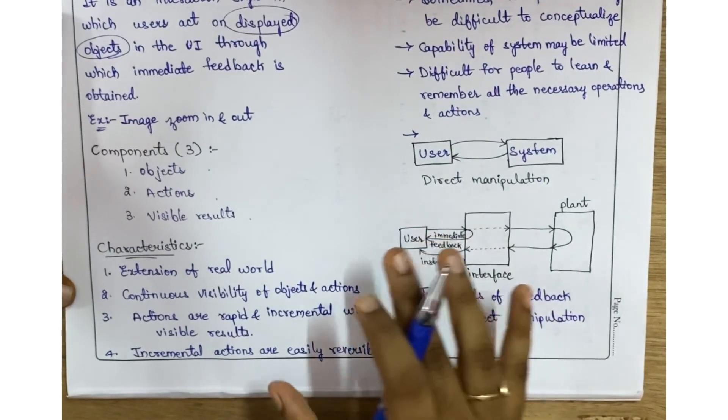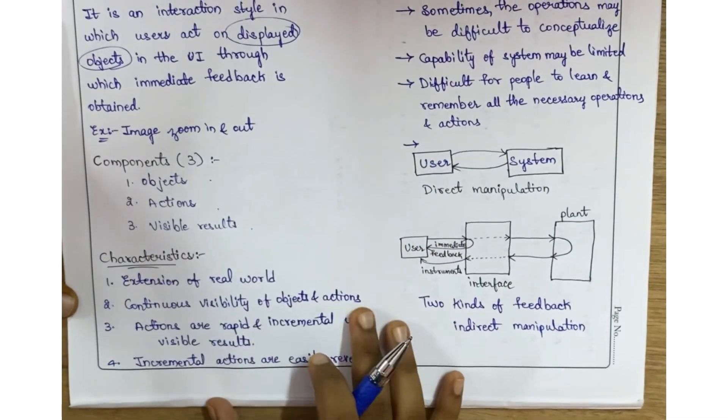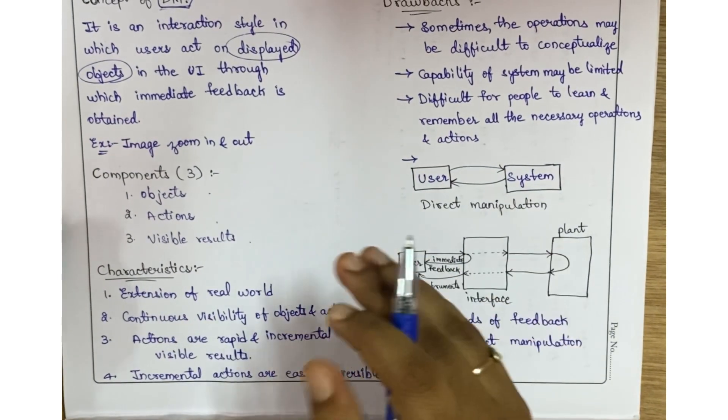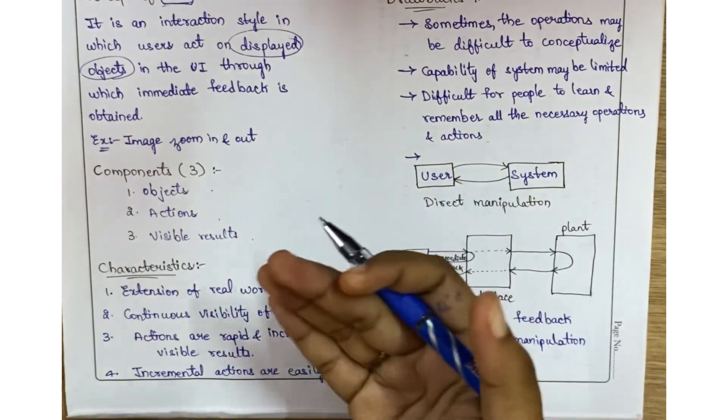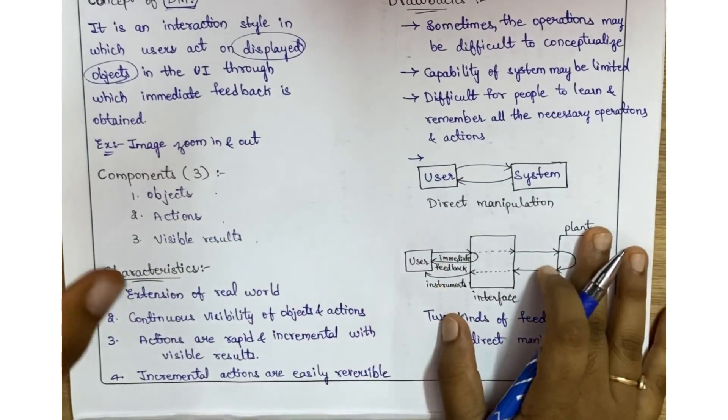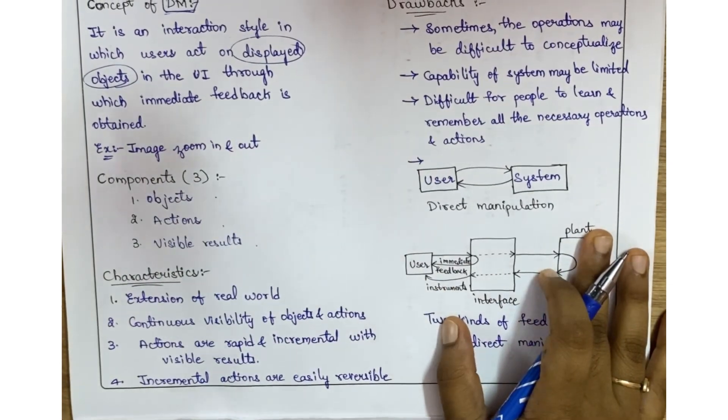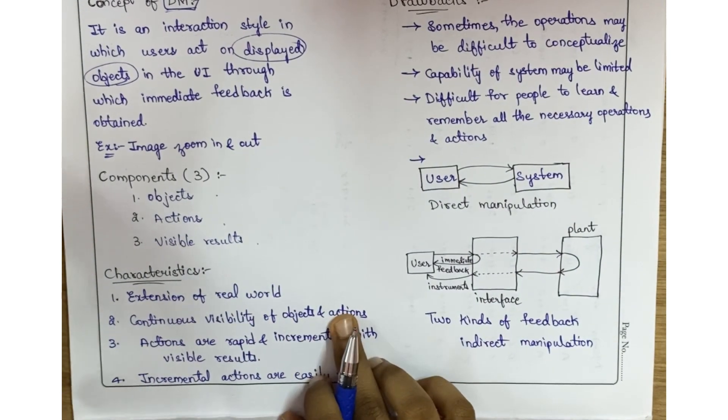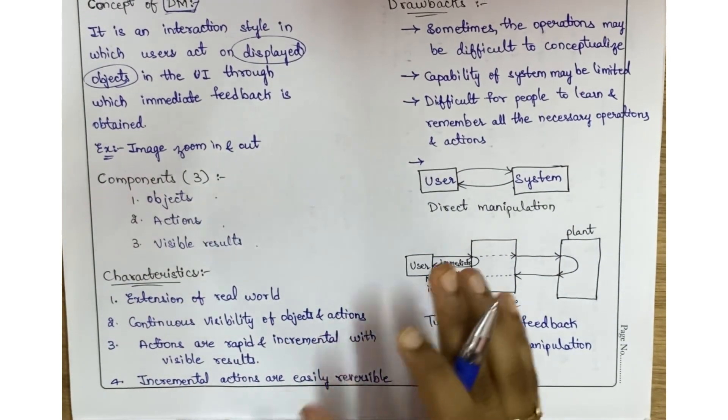The important characteristics of direct manipulation: it is the extension of the real world, meaning whatever you see in the real world is directly represented on screen as a 3D object. It has continuous visibility of objects and actions.